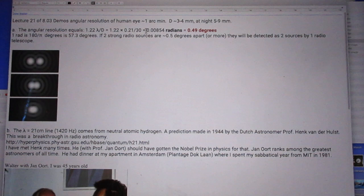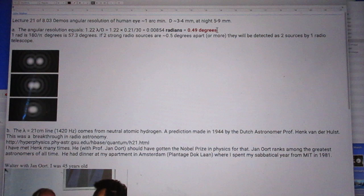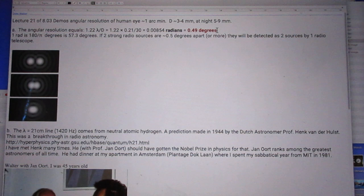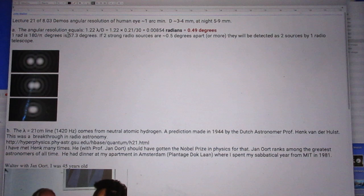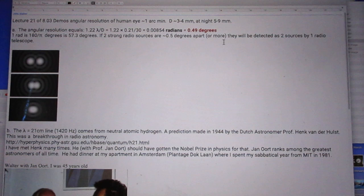Some people think that it is degrees, which is wrong. It is so many radians and that translates into 0.49 degrees, which is roughly also the diameter of the sun. Keep in mind that in one radian there are 57.3 degrees. So if two strong radio sources are about half a degree apart or more, they will be detected at two sources by one radio telescope.